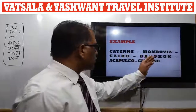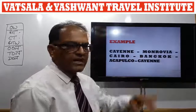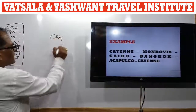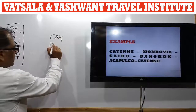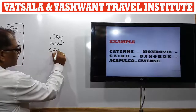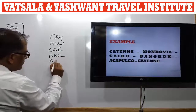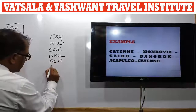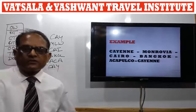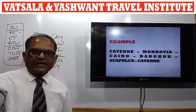Example 1 — the itinerary is: Kane → Monrovia → Cairo → Bangkok → Acapulco → Kane. First, we will identify the areas.